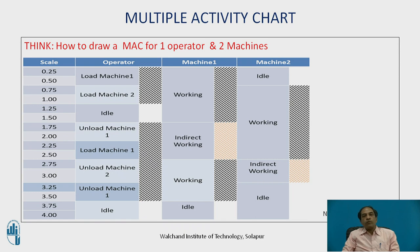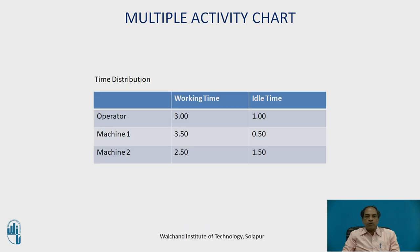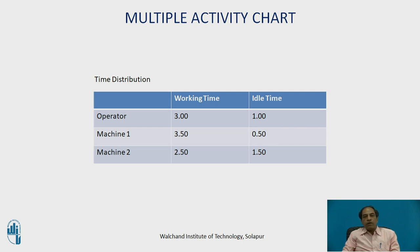Once the shift continues, this balancing can be adjusted. The total time distribution in this case is: operator total time 3 minutes, idle time 1 minute; machine 1 working time 3.5 minutes, idle time 0.5 minutes; machine 2 working time 2.5 minutes, idle time 1.5 minutes. From this we can determine the percentage idle times and assess whether the same operator could run a third or fourth machine.